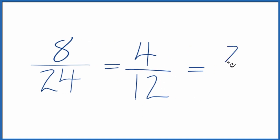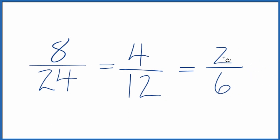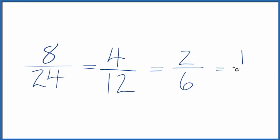So 4 divided by 2 is 2, 12 divided by 2 is 6. We can do this one more time. 2 divided by 2 is 1, 6 divided by 2 is 3.